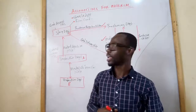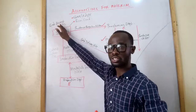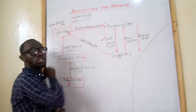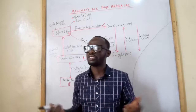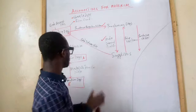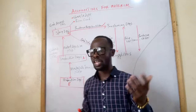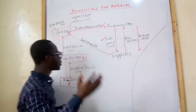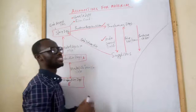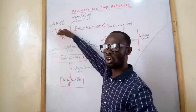Once goods are received and stored, the next document is the material requisition note. This is prepared by the production department to request raw materials from the storekeeper for the production process. For example, if producing Sobolo, the production department requests the leaves, ginger, and other ingredients needed. The material requisition note records what is being requested, is sent to the store department, and the materials are then issued.